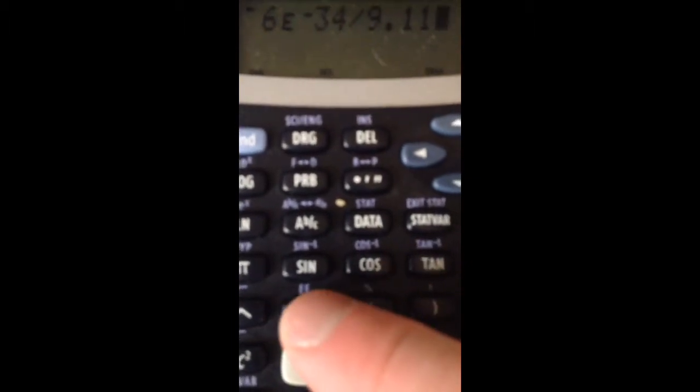Then I'm going to hit divided by, divided by, 9.11. And then I'm going to hit my second key, second. I'm going to hit that EE button again, or the X negative 1.